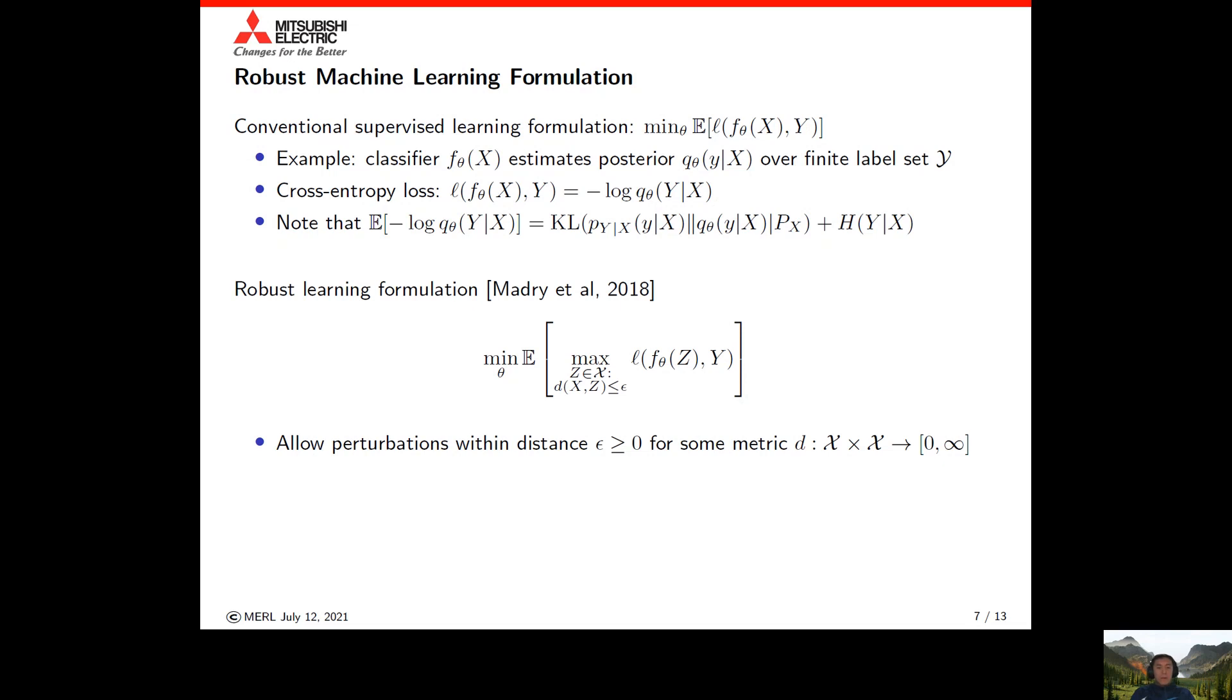The typical learning formulation is converted into a robust formulation by considering a min-max problem. Here, inside the expectation, we maximize over all perturbations z that are close to the original input x with respect to some distance metric. This formulation captures the notion of being robust with respect to the worst case input perturbation.